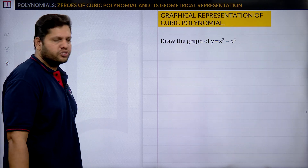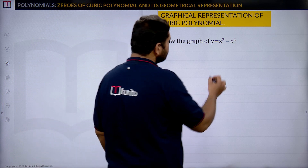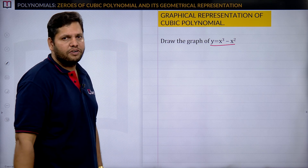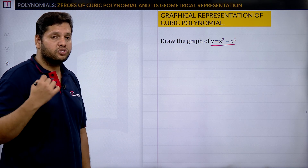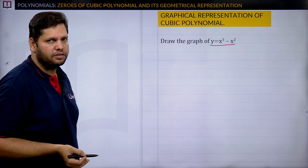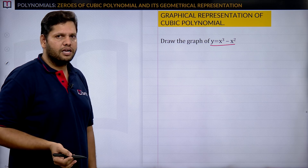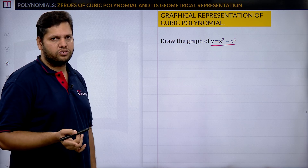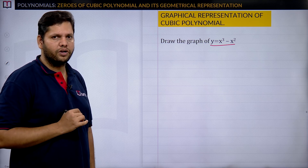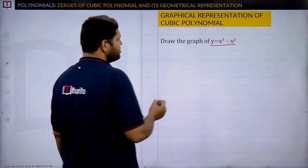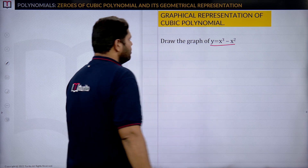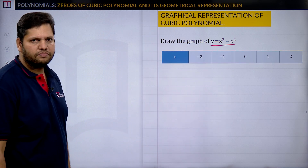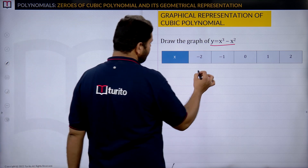Now let us see another question. The given polynomial is y = x³ − x². First we will find the zeros graphically, then theoretically, and check if both agree. Let us begin by computing points. Take x = −2.